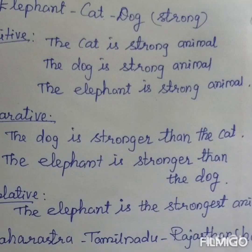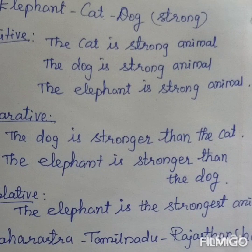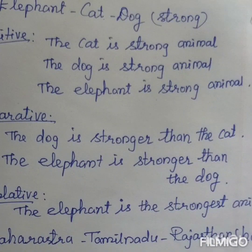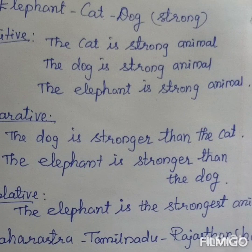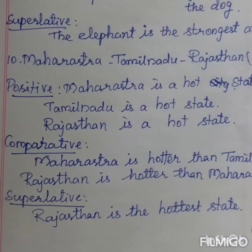Next: elephant, cat, dog — adjective is 'strong'. For positive degree: the cat is a strong animal, the dog is a strong animal, or the elephant is a strong animal. For comparative degree: the dog is stronger than the cat; the elephant is stronger than the dog. For superlative degree: the elephant is the strongest animal. Among these three, the elephant is the strongest, so only one sentence for superlative.